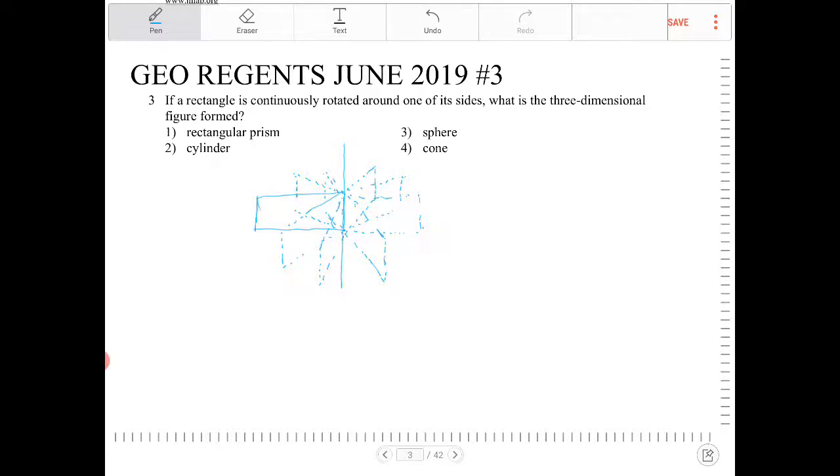So, you can sort of already see what kind of shape this is forming. This is actually forming a cylinder. Which option is that? That's option two.